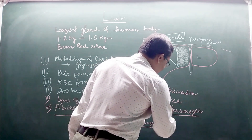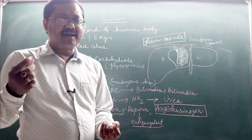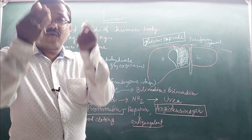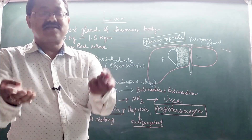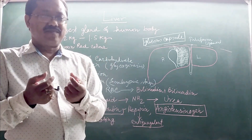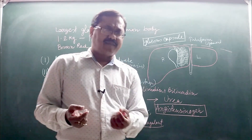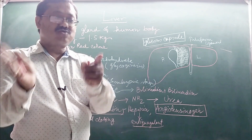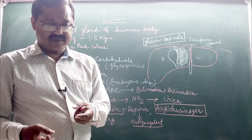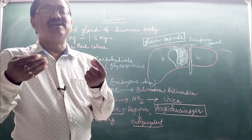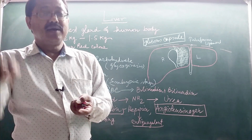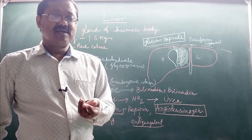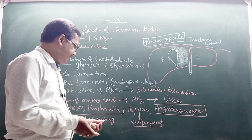Angiotensinogen is a proenzyme that is activated by renin. When blood pressure falls, angiotensinogen is converted into angiotensin 1 and angiotensin 2. These active compounds constrict blood vessels and raise blood pressure. This is the renin-angiotensin pathway.